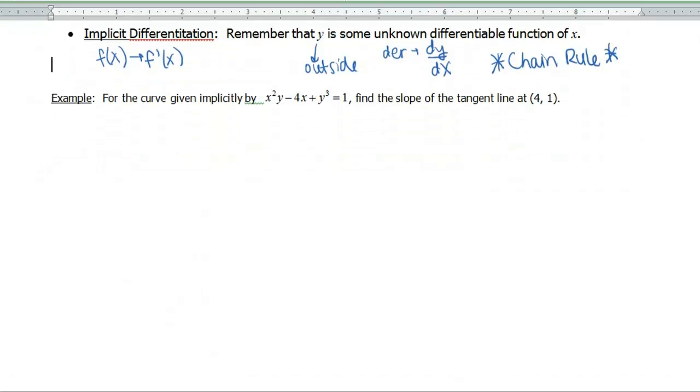The first example I want to look at today says for a curve given implicitly by x²y - 4x + y³ = 1, I want to find the slope of the tangent line at the point (4, 1). So first of all, why is this function defined implicitly? Well, can you solve it for y? I don't think you can do it very easily. It's probably doable, but just not very nice.